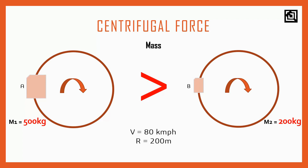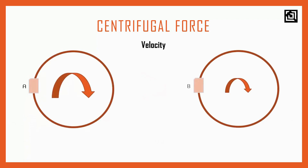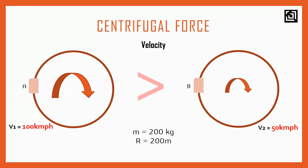Now let's take a look at the next factor: velocity. We vary the velocity while keeping the mass and radius constant. Body A has a velocity of 100 km/h and body B has a velocity of 50 km/h. Now we apply the same formula to compare the centrifugal force for body A and body B.